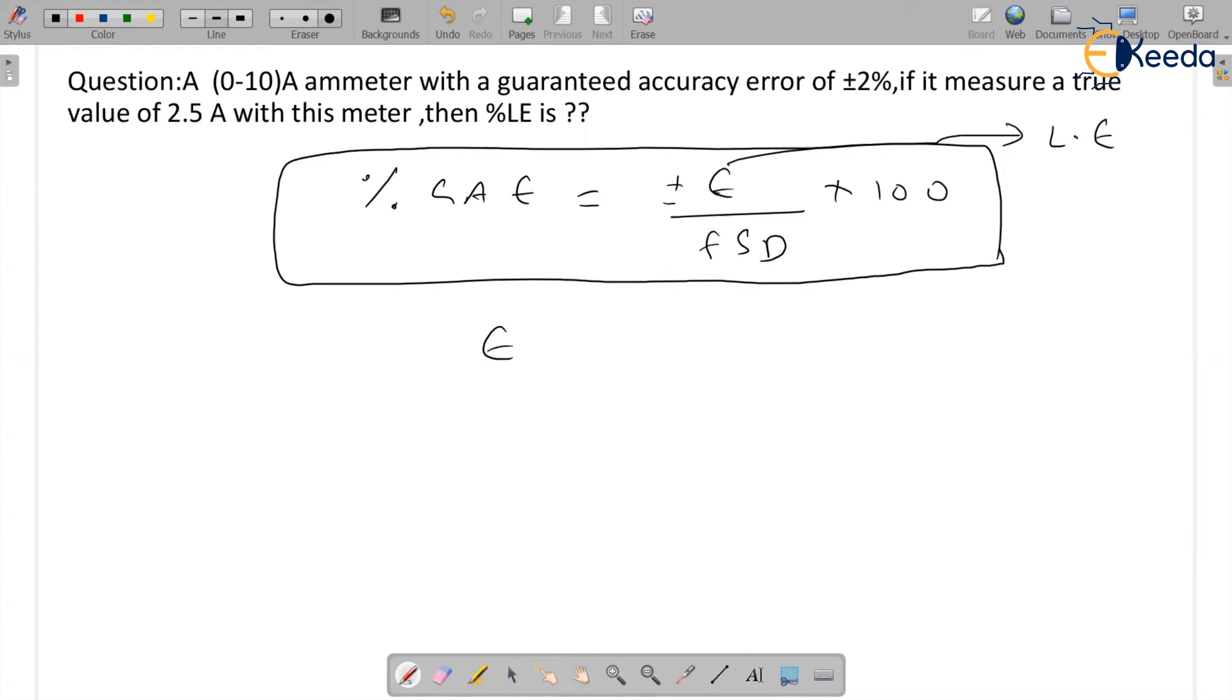What is your E? E is equal to percentage guaranteed accuracy error into FSD value by 100. It gives rise to 2 into 10 by 100 is equal to plus or minus 0.2. So finally I got error.